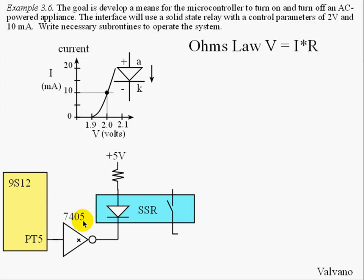The way this will work is: when PT5 is high, the output of the 7405 will be low and current will flow through the device, turning on the circuit. Let's build the rest of the interface.